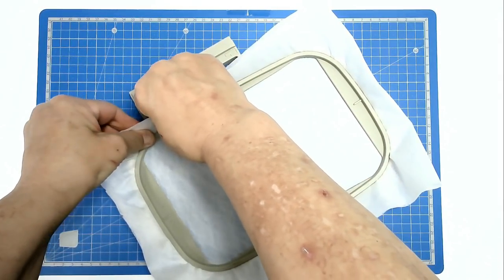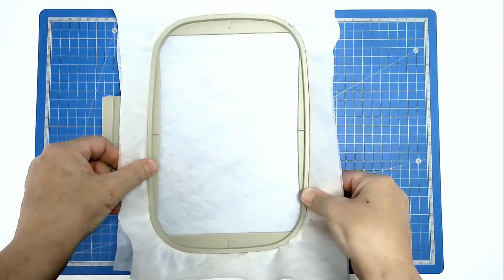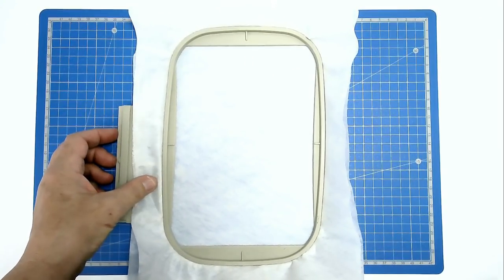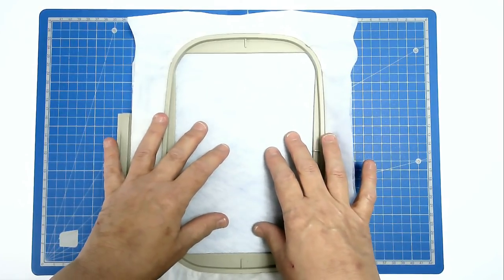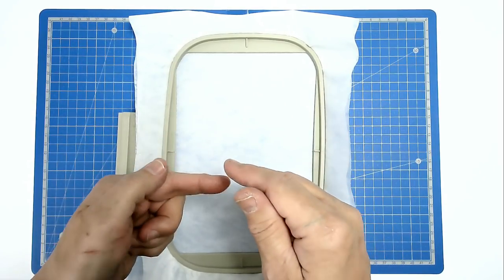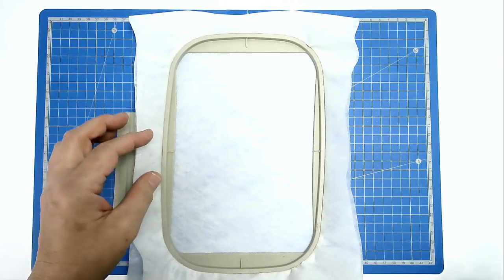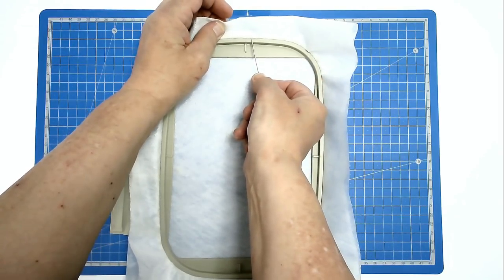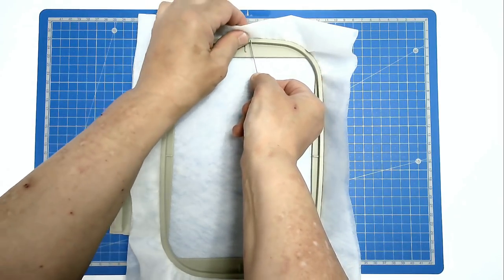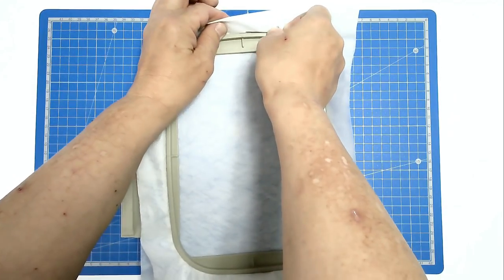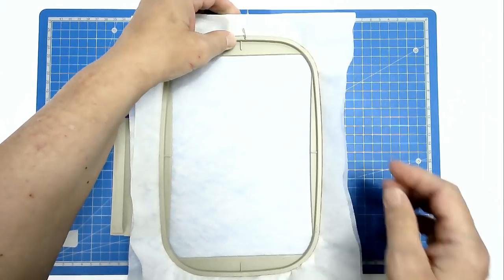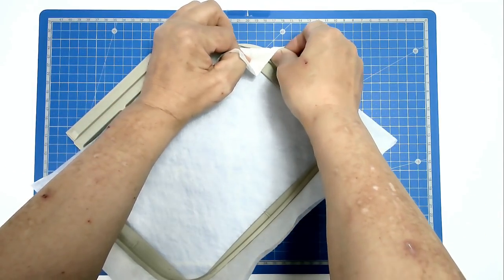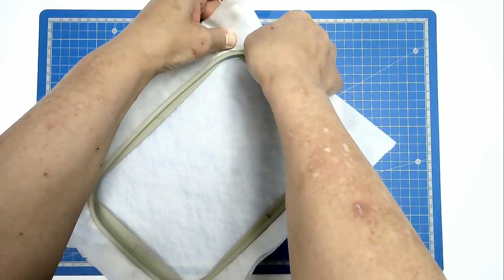You want to make sure that your stabilizer is nice and taut. And then we're going to pin the life out of this because we don't want this to move while it's stitching, because all the stitches need to mesh. So take your pin and place it down on the inner hoop, push it through and back round again, back through the stabilizer. And you're going to do this all the way round.